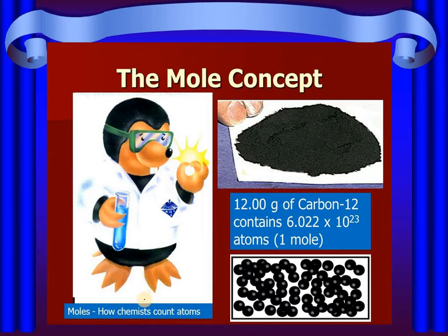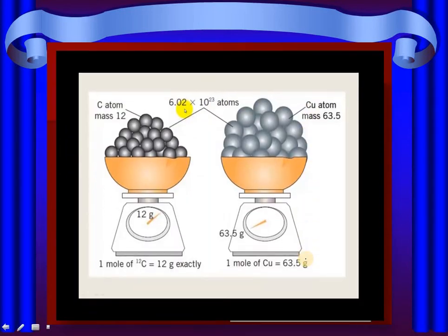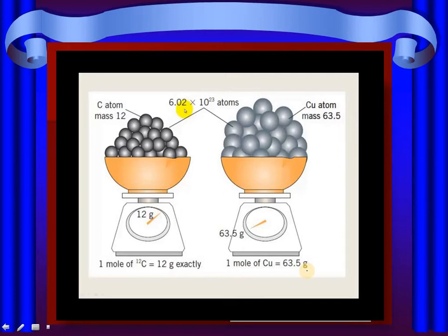Basically, chemists made the mole concept. One mole of carbon is 12 grams of carbon, and that contains Avogadro's number of atoms, which equals one mole. If we compare two atoms - carbon and copper - the weight is different, but the number of atoms remains the same because this is also one mole and that is also one mole. Carbon's atomic mass is 12, so one mole equals 12 grams. For copper, one mole equals 63.5 grams because that is the atomic mass of copper.